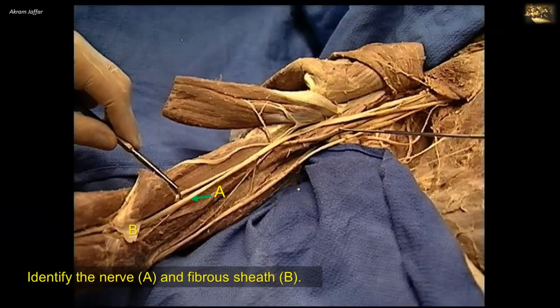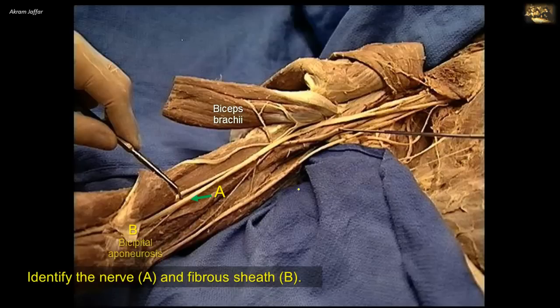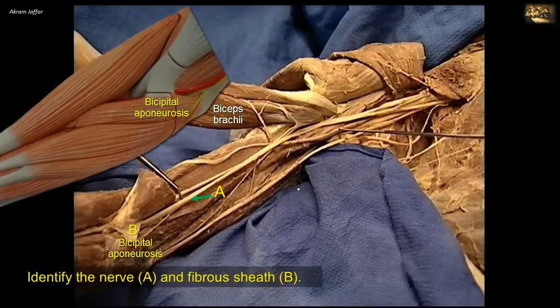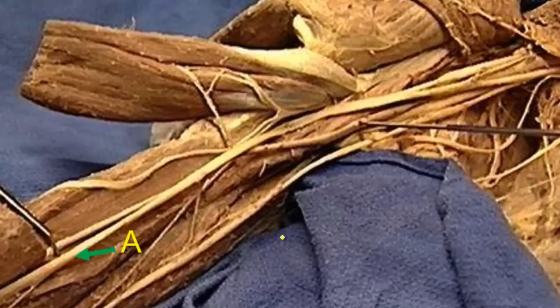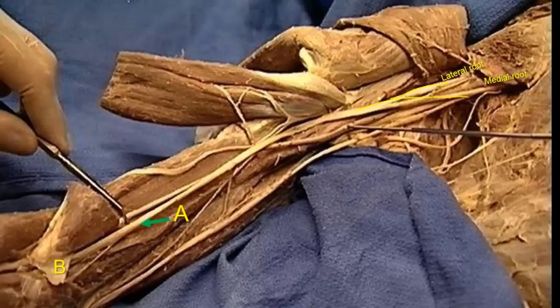Identify the nerve A and fibrous sheath B. This is a deep dissection of the flexor compartment of the arm, showing the biceps brachii being cut proximal to its tendon of insertion and reflected laterally. Note that the tendon of biceps at the roof of the cubital fossa has an extension called the bicipital aponeurosis. This is a thin sheet of connective tissue that passes medially to blend with the deep fascia of the forearm. An aponeurosis means a wide, flat tendon. Follow the nerve A proximally. Note that in the axilla it arises from the medial and lateral cords of the brachial plexus. It is the median nerve.